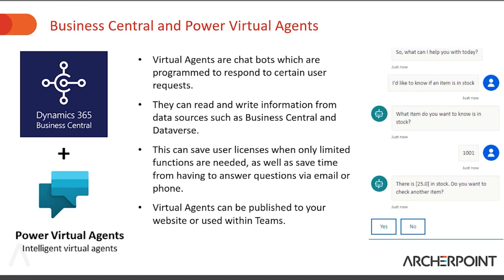The next area is Power Virtual Agents — chatbots that are set up by the user using prompts. This is similar to an automated phone line asking what it can help you with, except it's all text-based and it can read and write information. For example, if someone is on your site entering contact information, you can collect prompts and then create that contact as a prospect in your system for a salesperson to follow up with. Or, as in this example, we've used it to request how much of a certain item is in stock. This is a great way to reduce the time CSRs spend on the phone and email answering the same questions — order status, confirmation numbers — all things that can be answered with a virtual agent. The back end of this uses Power Automate, where all those triggers happen.